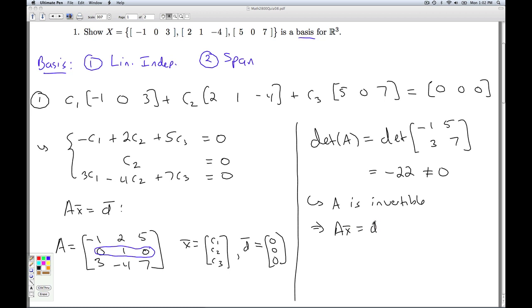Since A is invertible, Ax = D has one and only one solution for each choice of D. So in particular, the only solution to Ax = 0 is x = 0. And that's exactly what I needed to show for linear independence.